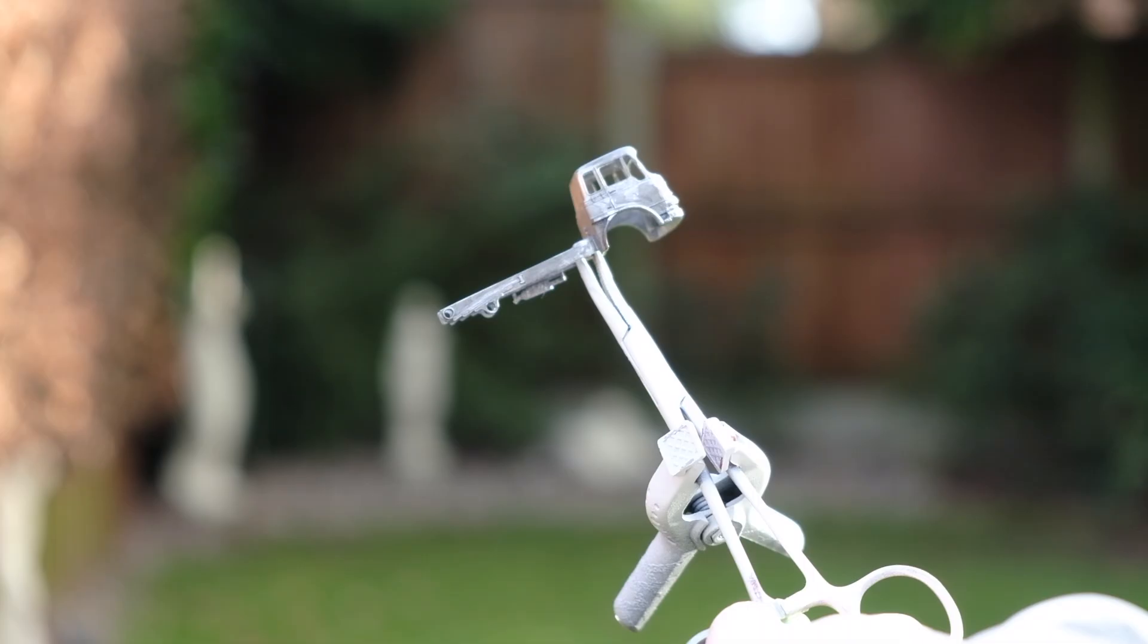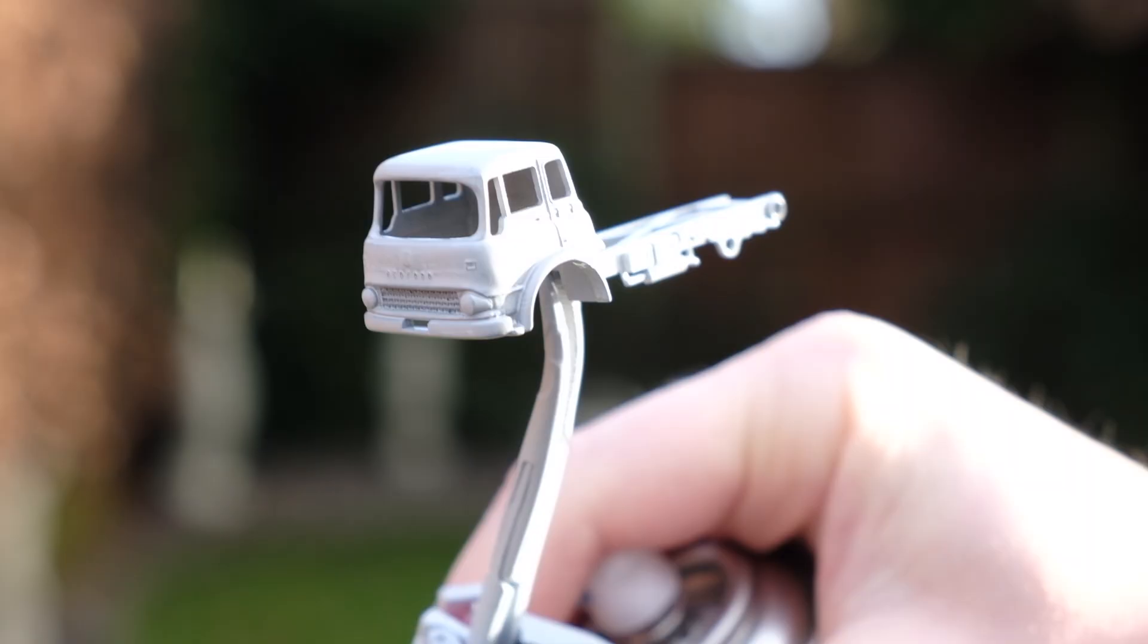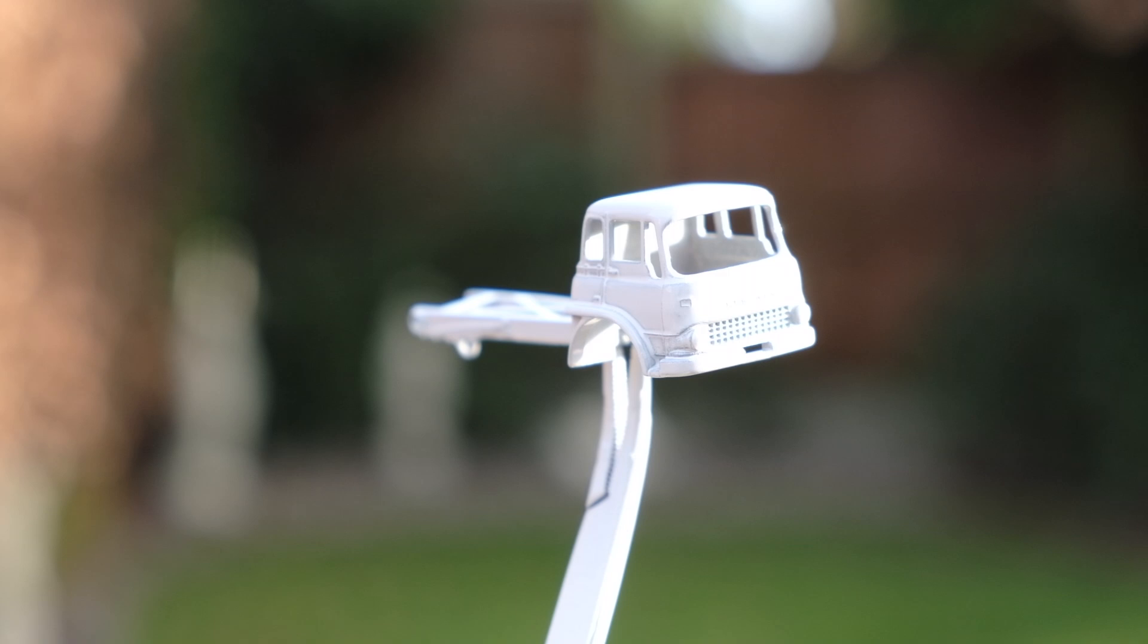The tipping action is a bit archaic on this model when compared to the castings that implemented Lesney's hydro sleeve system or even the plastic block like on the 1963 Hoveringham tipper. It flaps around a bit and it sits rather loosely on the back of the chassis.